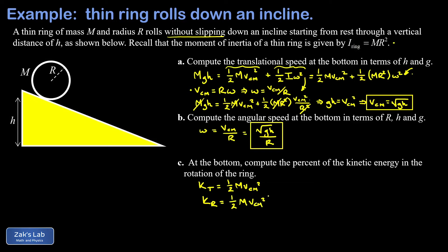I can tell at a glance the translational and rotational components have exactly the same size. And this means 50 percent of the energy of this rolling ring is in the rotation. And that's it.